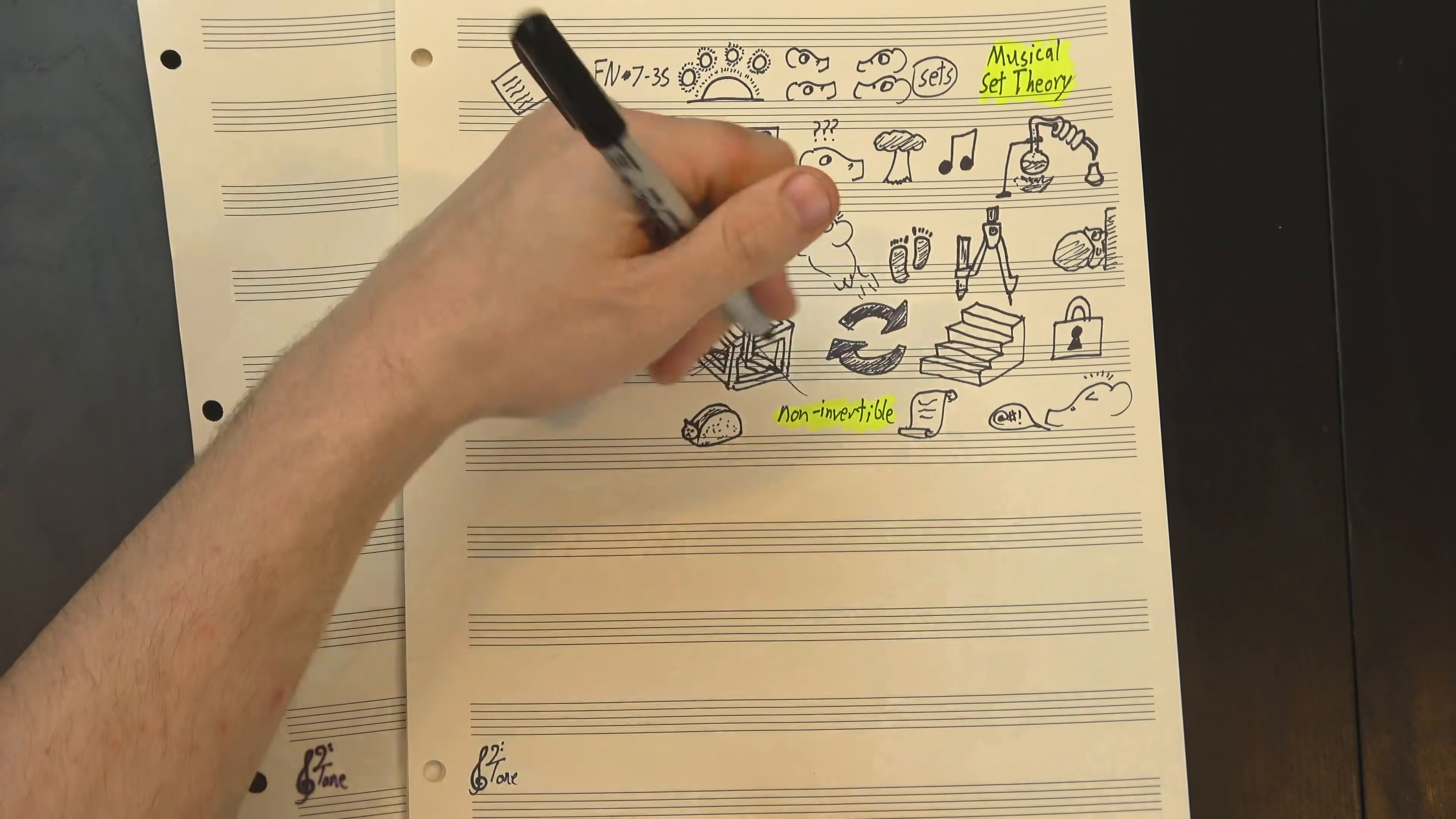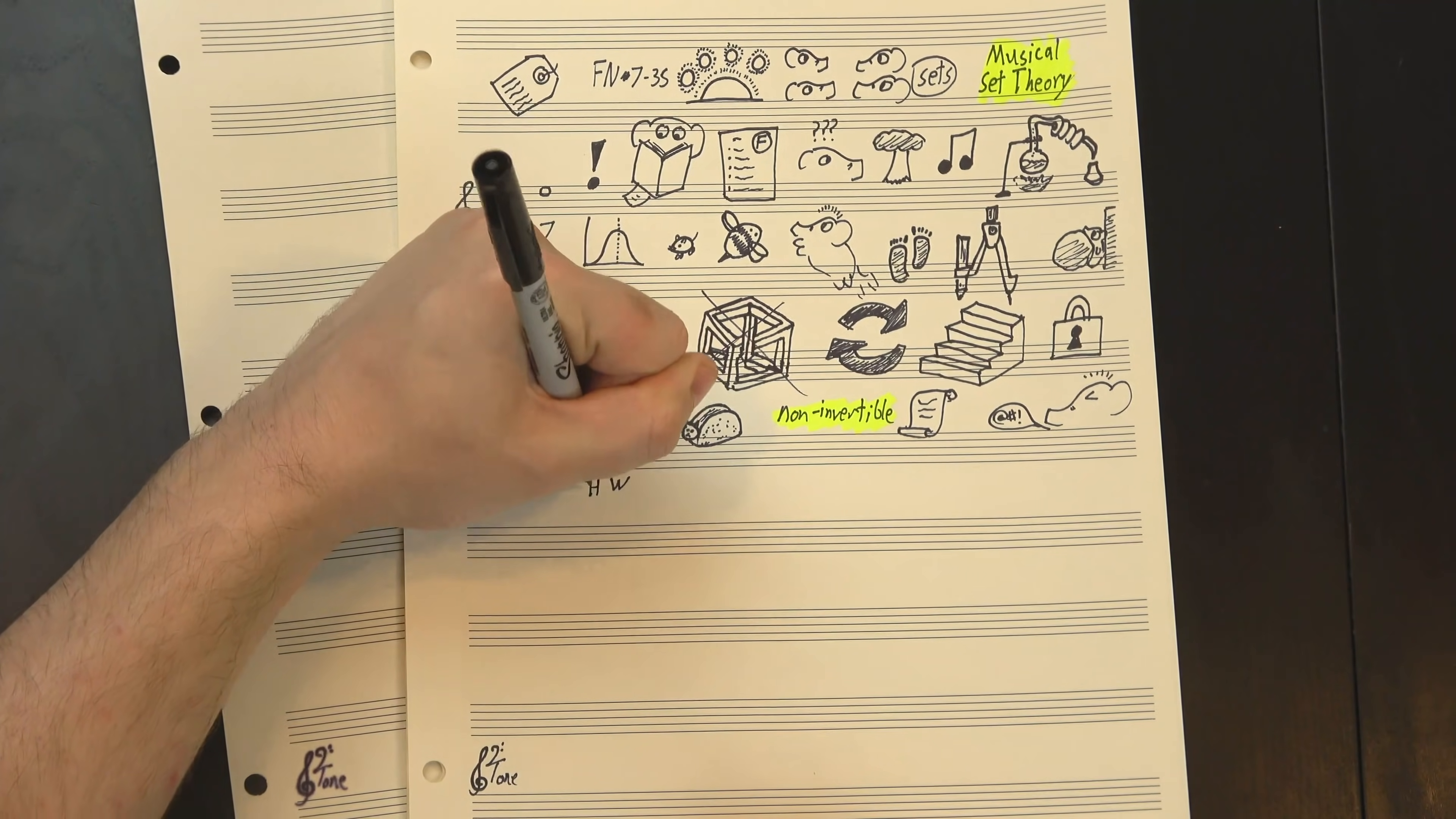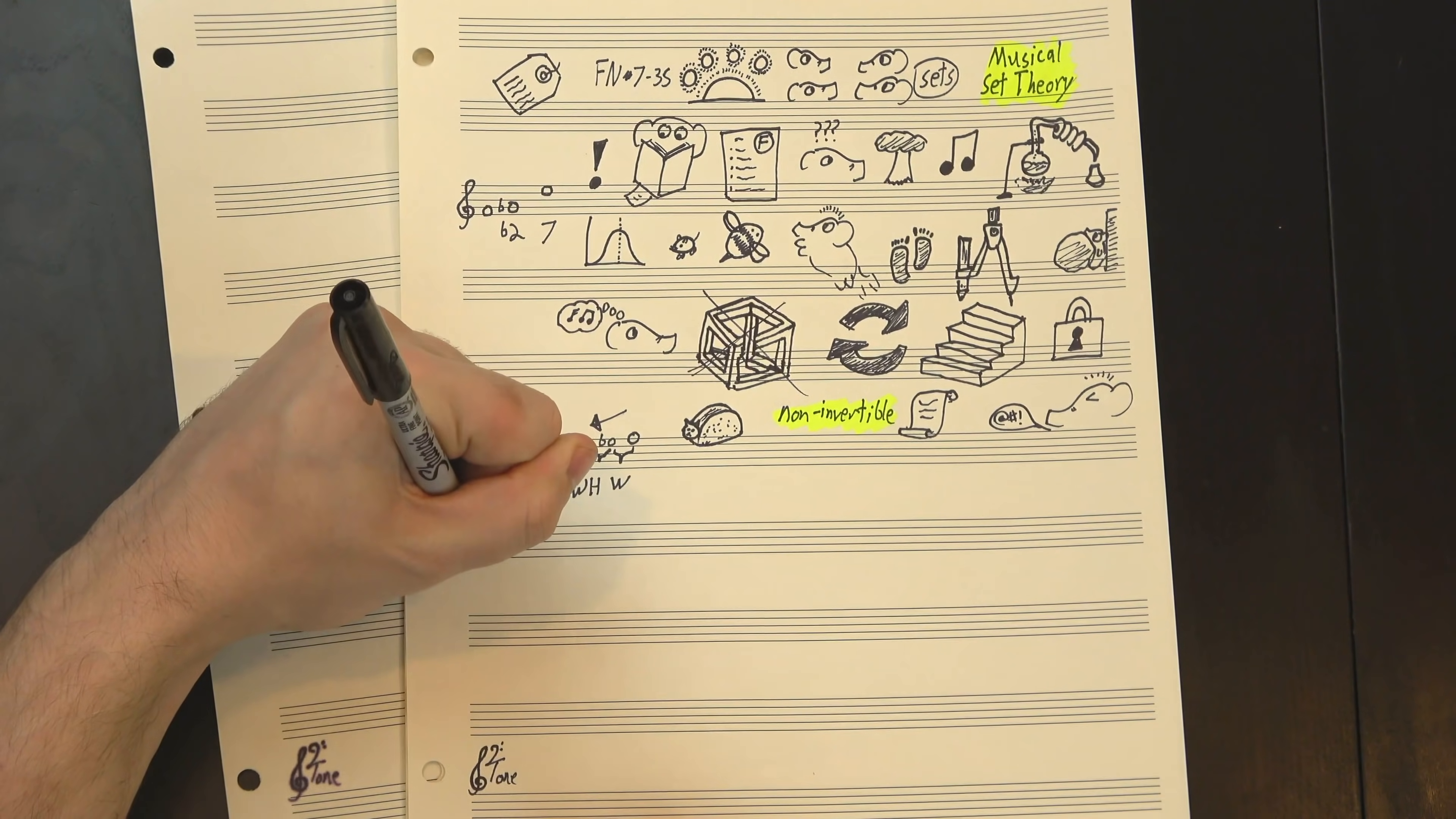I had also guessed that many of the sets represented on my list would be non-invertible. Effectively, they'd have a mode that was a palindrome, like Dorian, the second mode of major. Here, we start with a whole step, and we also end with a whole step. Going inward, we have these half-steps, then these whole steps, then finally another whole step in the middle. Basically, the interval pattern is the same in either direction, so if we turn the whole thing upside down, we get the same scale we started with.